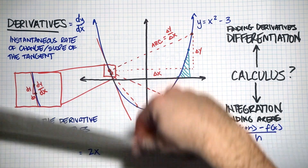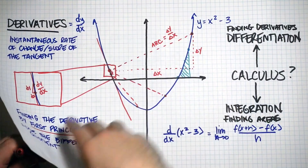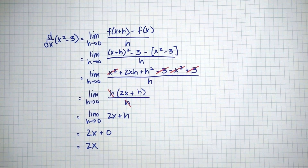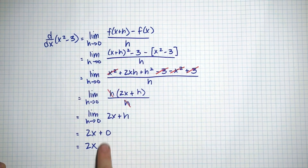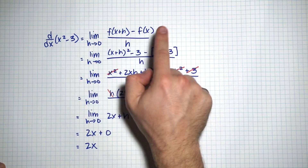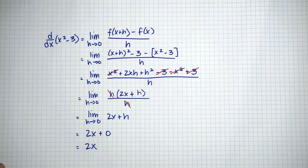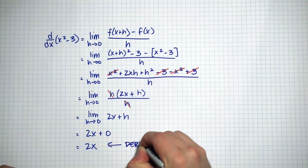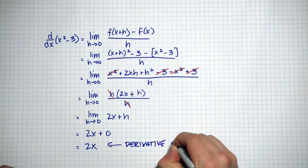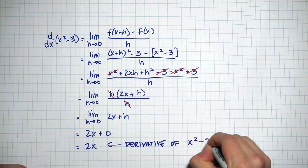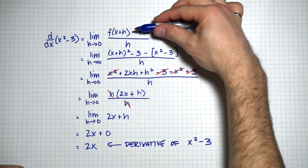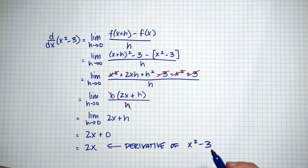Hopefully you've found that. Here is the difference quotient worked out, and what we end up with is 2x. After plugging in the function at x plus h minus the function at x, I get 2x as my result. So this is the derivative — the derivative of the function x squared minus 3 is 2x. In calculus, we're going to learn lots of tricks to go directly from the function to the derivative without doing all this work.